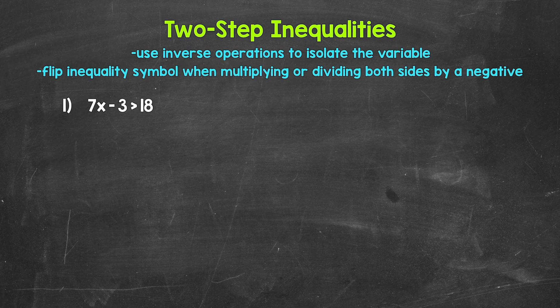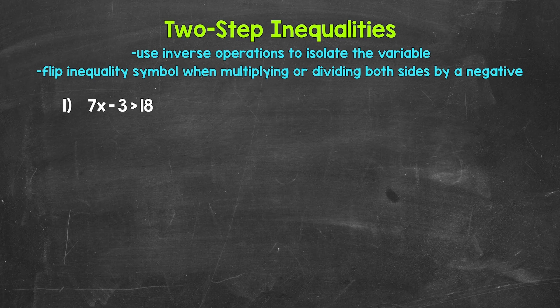When we solve two-step inequalities, we want to isolate the variable — get it by itself on one side of the inequality. We do that by using inverse operations, so this is very similar to solving two-step equations. If you can solve an equation, you can solve an inequality. One thing we need to be aware of when it comes to inequalities: we flip the inequality symbol when multiplying or dividing both sides by a negative.